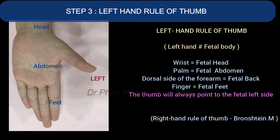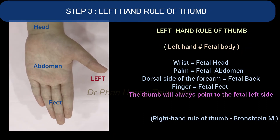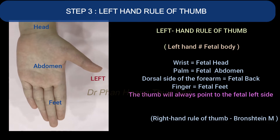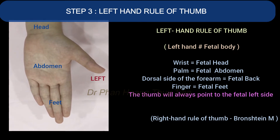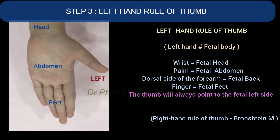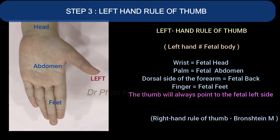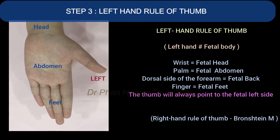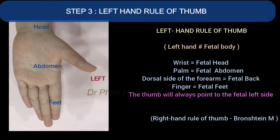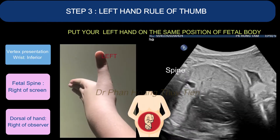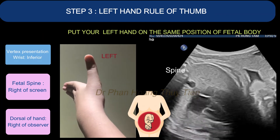Step 3. We will be taking a look at the left-hand rules of thumb, adapted by Bronston and instructions from Dr. Le Kim Thuy. The wrist will be the fetal head, the palm will be the fetal abdomen, the dorsal side of the forearm will be equivalent to the fetal back, and the fingers will be equivalent to the fetal feet. As you put your left hand on the same position of the fetal body,